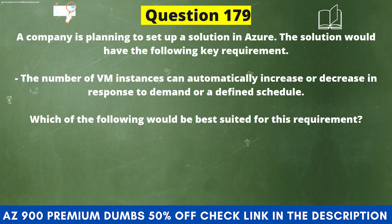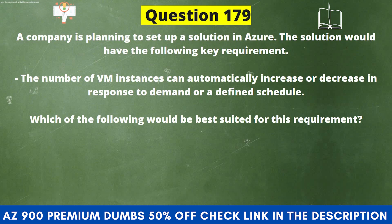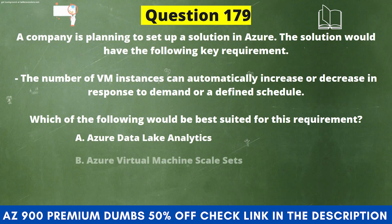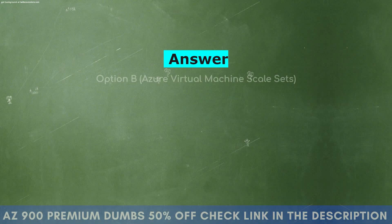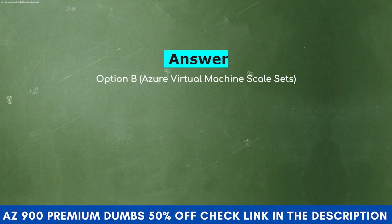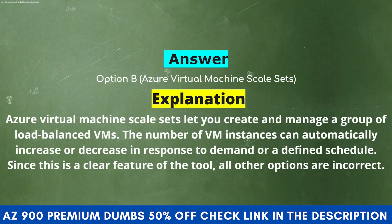A company is planning to set up a solution in Azure where the number of VM instances can automatically increase or decrease in response to demand or a defined schedule. Which of the following would be best suited? Option A: Azure Data Lake Analytics. Option B: Azure Virtual Machine Scale Sets. Option C: Azure Virtual Network. Option D: Azure App Service. The correct answer is Option B, Azure Virtual Machine Scale Sets. They let you create and manage a group of load-balanced VMs whose count can automatically increase or decrease in response to demand or a defined schedule.